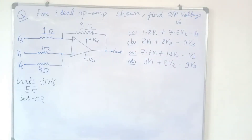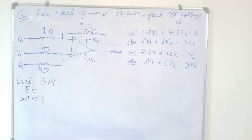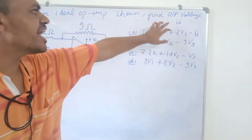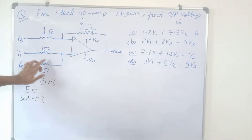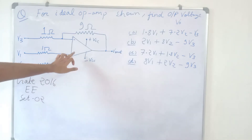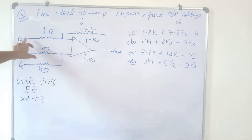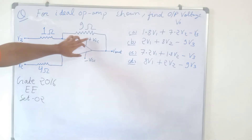We are solving a question from GATE 2016 electrical branch — a very good question on op-amps. We are given an ideal op-amp and we have to find the output voltage V0. Three voltages are given: V1 and V2 are connected to the positive terminal or the non-inverting terminal, and V3 is connected to the negative terminal or the inverting terminal.